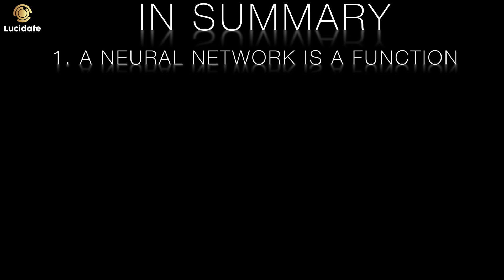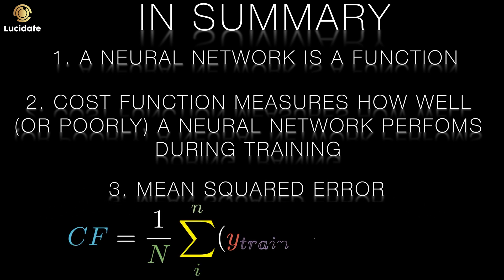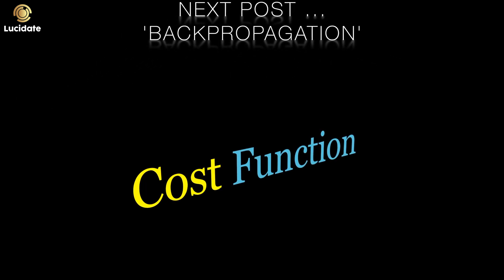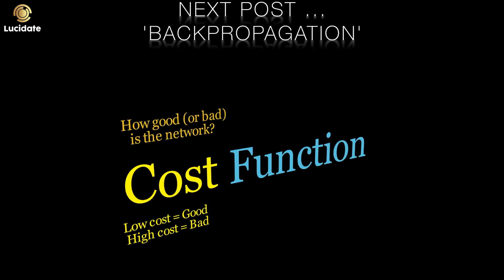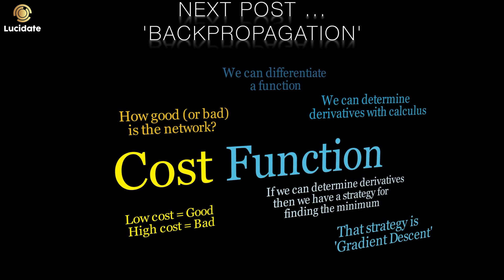So in summary, we've seen how we can represent the neural network as a function. We've applied a cost function to measure how accurately, or otherwise, the network has learned the mapping between the inputs and the outputs while training. Then we've looked at the mean squared error as a good choice of cost function. This ticks a lot of boxes. It ensures that positive and negative errors are cumulative rather than cancelling each other out, and it normalizes the error by taking an average. In the next post, we'll see how we can use the derivatives of the cost function to get a strategy to tweak the parameters of the network after every epoch. This goes by the formal name of backpropagation.